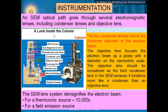The optical part passes through several electromagnetic lenses — you can understand it is a very complicated structure. Two condenser lenses reduce the crossover diameter of the electron beam. The objective lens focuses the electron beam as a probe with a diameter on the nanometric scale, finally converging to a nanometric diameter. The objective lens should be considered as the third condenser lens in the SEM because it functions more like a condenser than an objective lens.